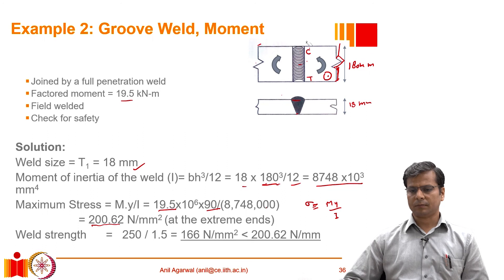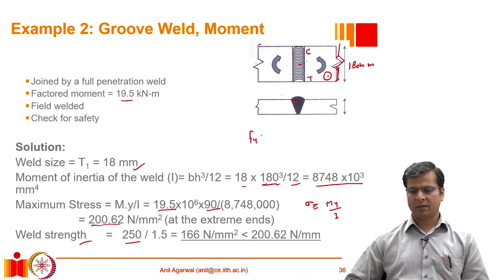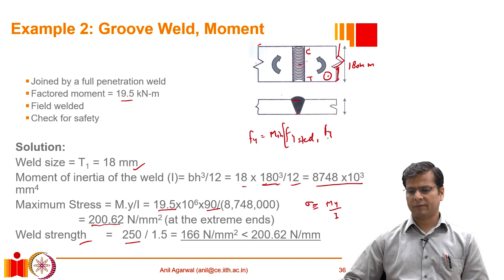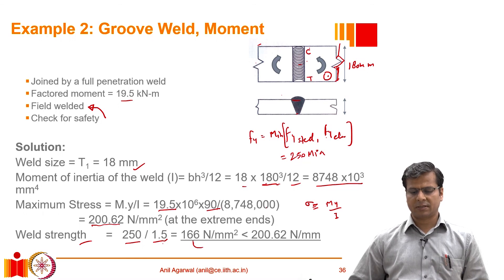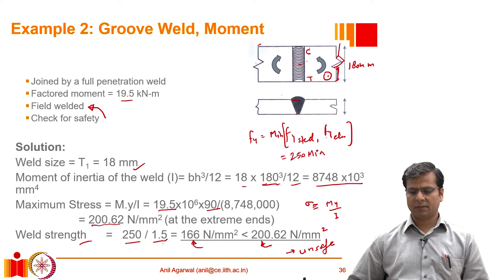The allowable weld strength per the limit state design is Fy / γMW, where Fy is the minimum of the steel and electrode yield stresses, giving 250 MPa. Since this is a field weld, γMW = 1.5, giving a weld strength of 166 N/mm². The demand stress is 200 N/mm², which exceeds the capacity of 166 N/mm², and therefore this weld is found to be unsafe.